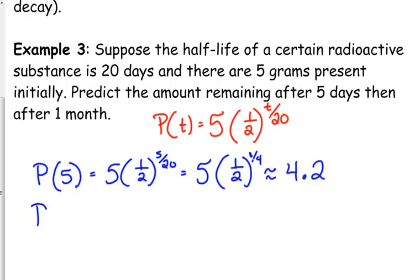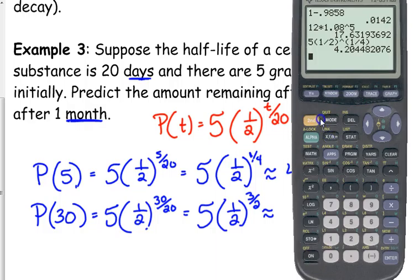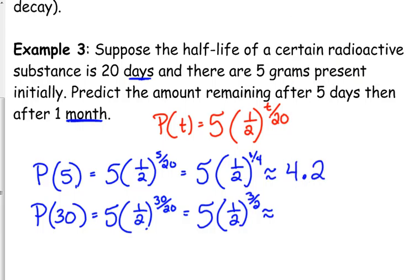Now, after one month, what are we going to plug in for one month? 30. We're going to assume a month is 30 days. So, I'll plug in 30, because the units don't agree. Month, days, it has to be in days. So, we're going to use 30 for a month. Keep it simple. So, that's 1/2 to the 3 over 2. It should be less than 2.5, because we have gone for an entire half-life, a little bit more than one half-life. It is 1.77.